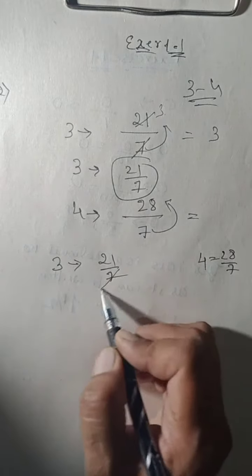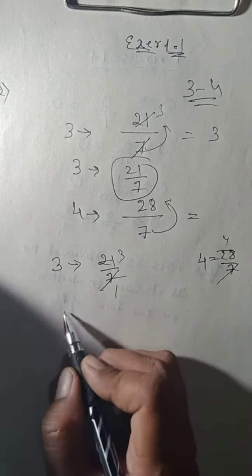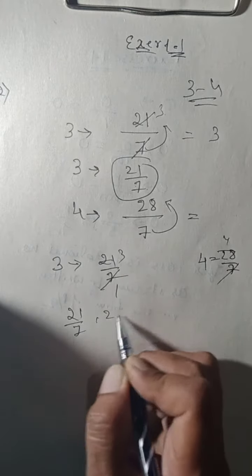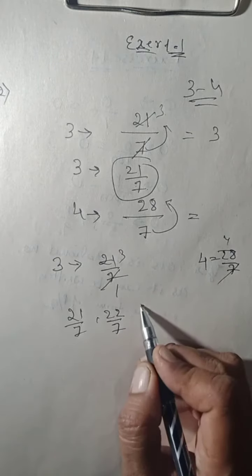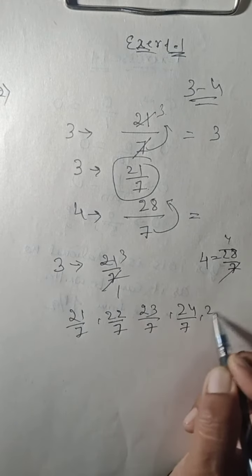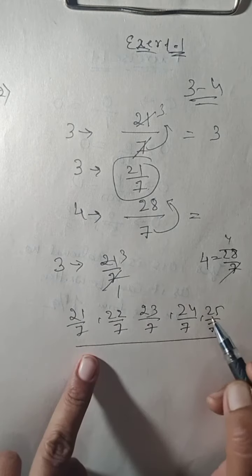So children, 3 can be written as 21 upon 7 and 4 can be written as 28 upon 7. That means between 3 and 4, we have 21 upon 7, 22 upon 7, then 23 upon 7, 24 upon 7, then 25 upon 7.